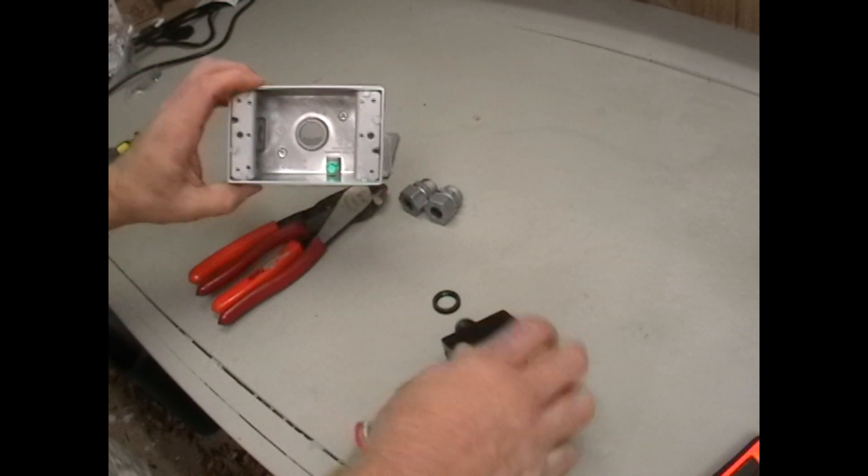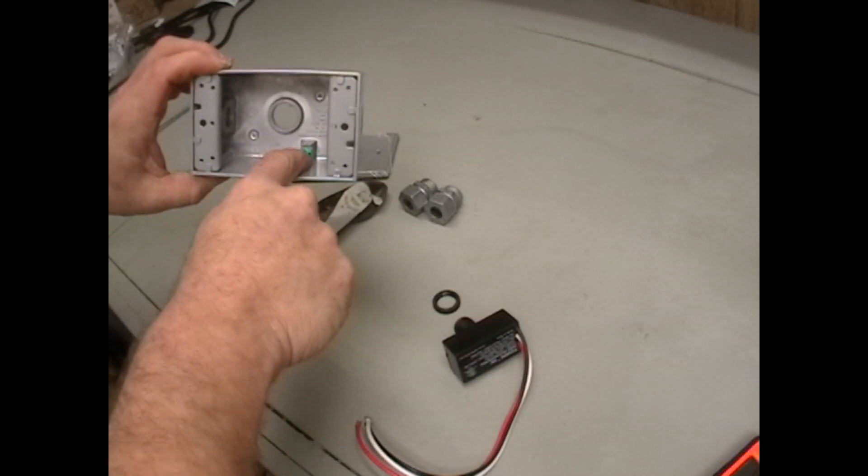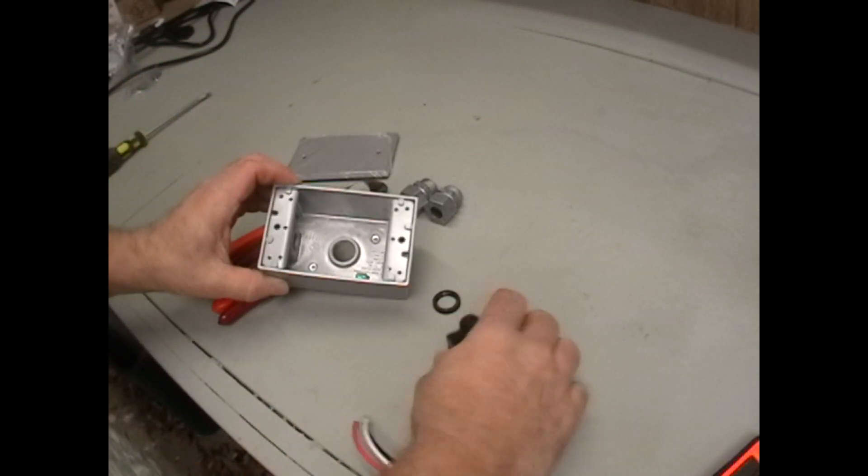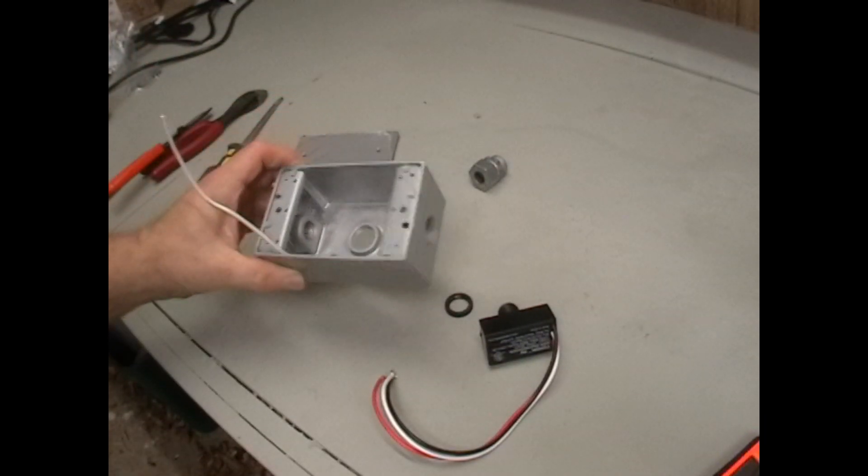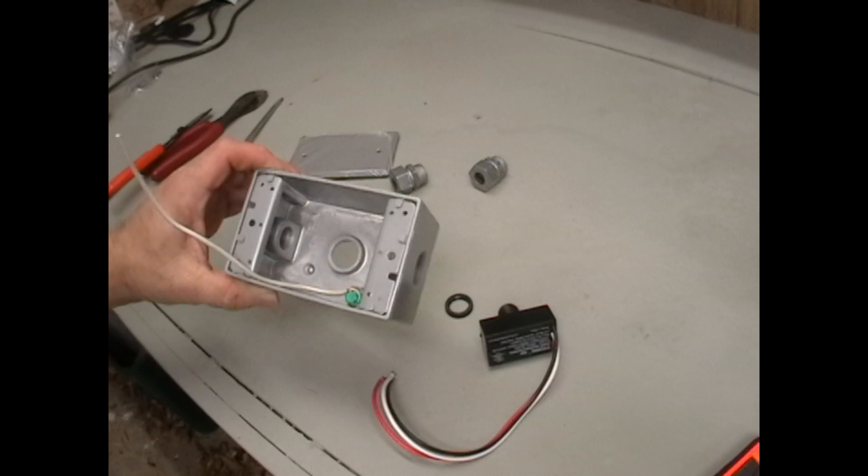One of the first things I'm going to do is remove this green ground wire, because once I put this photocell in it's going to get kind of crowded. Okay, I've got the ground coming out of my box. Now I'm going to put the photocell in next.